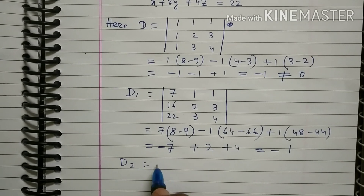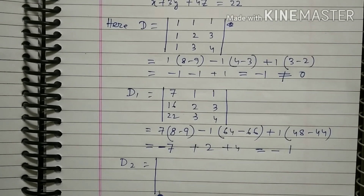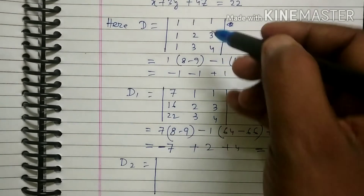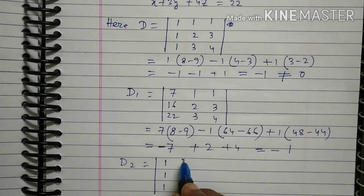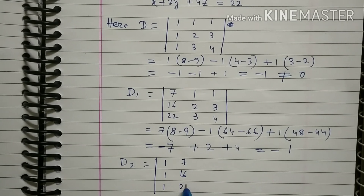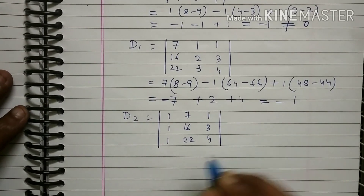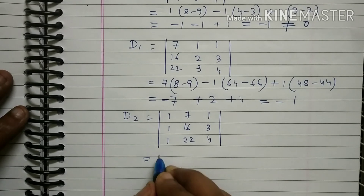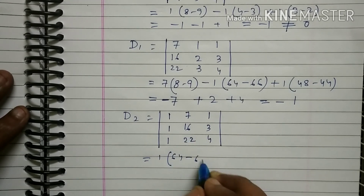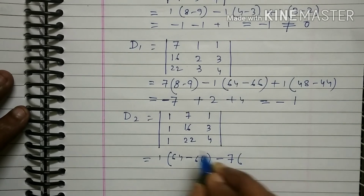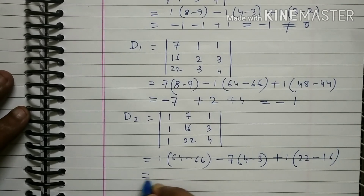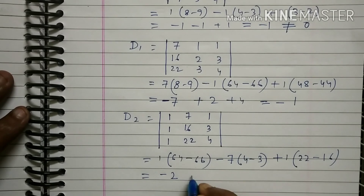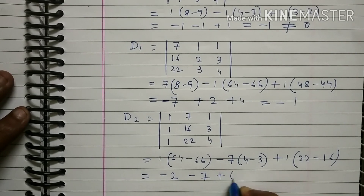D2: the second column is replaced by 7, 16, 22, giving the matrix with rows 1 7 1, 1 16 3, 1 22 4. This equals 1(64 minus 66) minus 7(4 minus 3) plus 1(22 minus 16), which gives minus 2 minus 7 plus 6, equals minus 3.